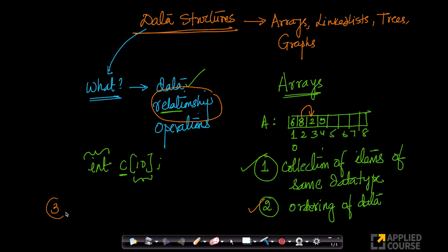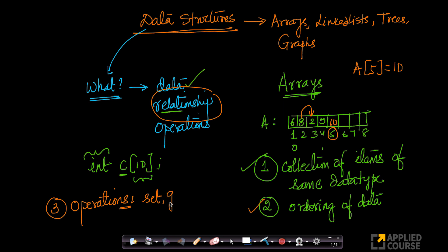What about operations? If you think about an array, there are multiple operations we can perform. We can set any value — for example, set a value of 10 at index 5. You can also get a value: if some variable x equals a[2], and a[2] is 8, then x becomes 8. Set and get are two operations — to set a value within the array at a given index, and to obtain a value at a given index. Set and get are two very important operations.